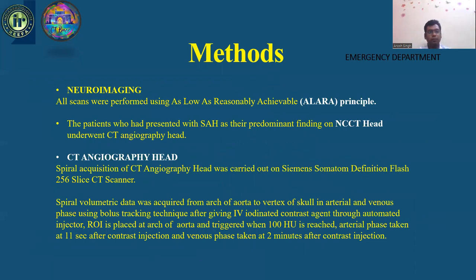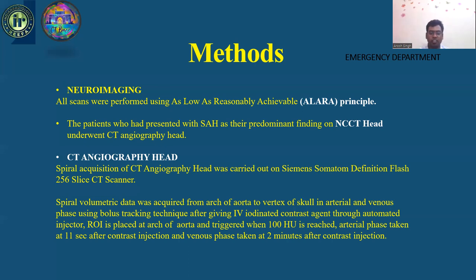Methods and Neuroimaging: All scans were performed using the ALARA (as low as reasonably achievable) principle. Patients who presented with SAH as the predominant finding on NCCT head underwent CT angiography head. Spiral acquisition was carried out on a Siemens SOMATOM Definition Flash 256-slice CT scanner. Spiral volumetric data was acquired from the arch of aorta to vertex of skull in arterial and venous phase using bolus tracking technique after giving IV iodinated contrast agent through automated injector. ROI was placed at the arch of aorta and triggered when 100 HU was reached. Arterial phase was taken at 11 seconds after contrast injection and venous phase at 2 minutes after contrast injection.